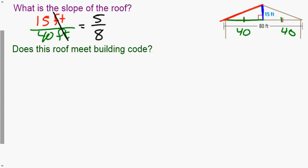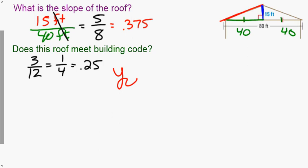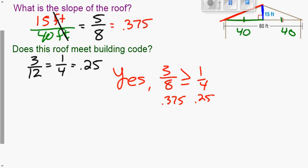Does this roof meet building code? The minimum slope is 3/12, which reduces to 1/4 = 0.25. Our roof slope is 5/8 = 0.375. Since 0.375 > 0.25, the roof meets code — 3/8 is greater than 1/4. If you have any questions make sure you reach out, otherwise have a great day everyone.